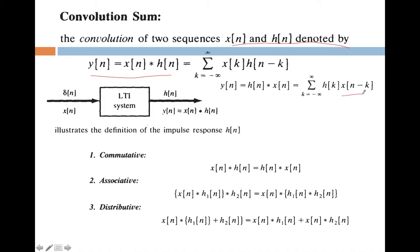When you are giving input x of n to a linear time invariant discrete time system, then the output y of n is equal to the input signal x of n convolved with the impulse response of the LTI system h of n. This is the main important thing related to convolution summation.